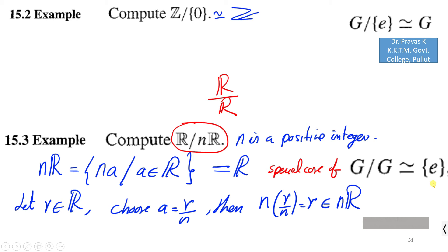We have seen two special cases of factor group computation: when the normal subgroup is the trivial subgroup E, we have G over E isomorphic to G; and when the normal subgroup is G itself, we have G over G isomorphic to E.